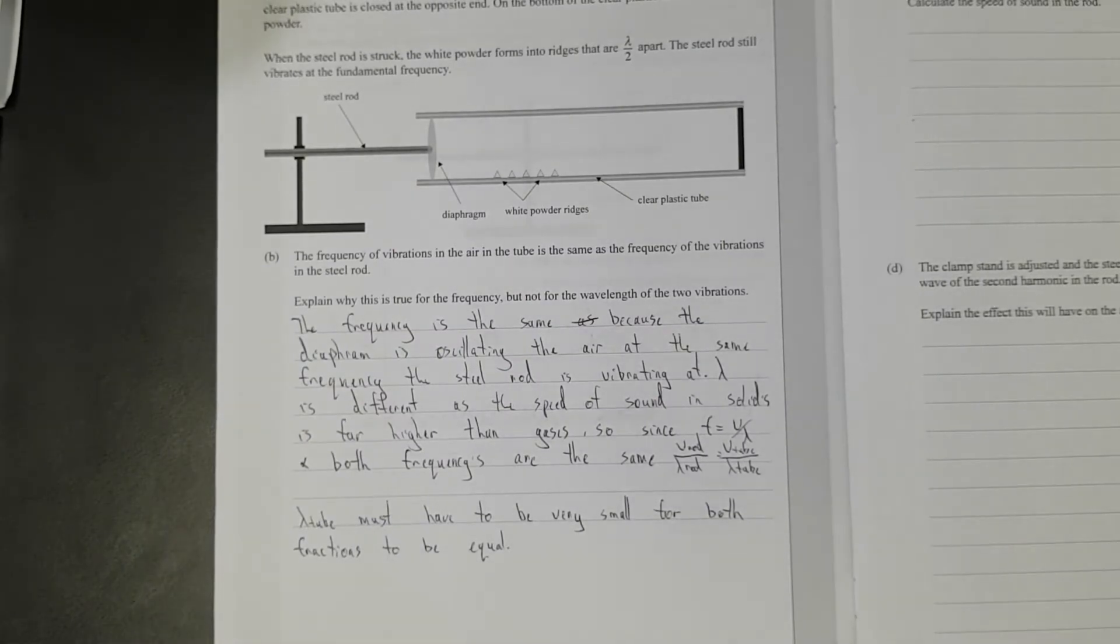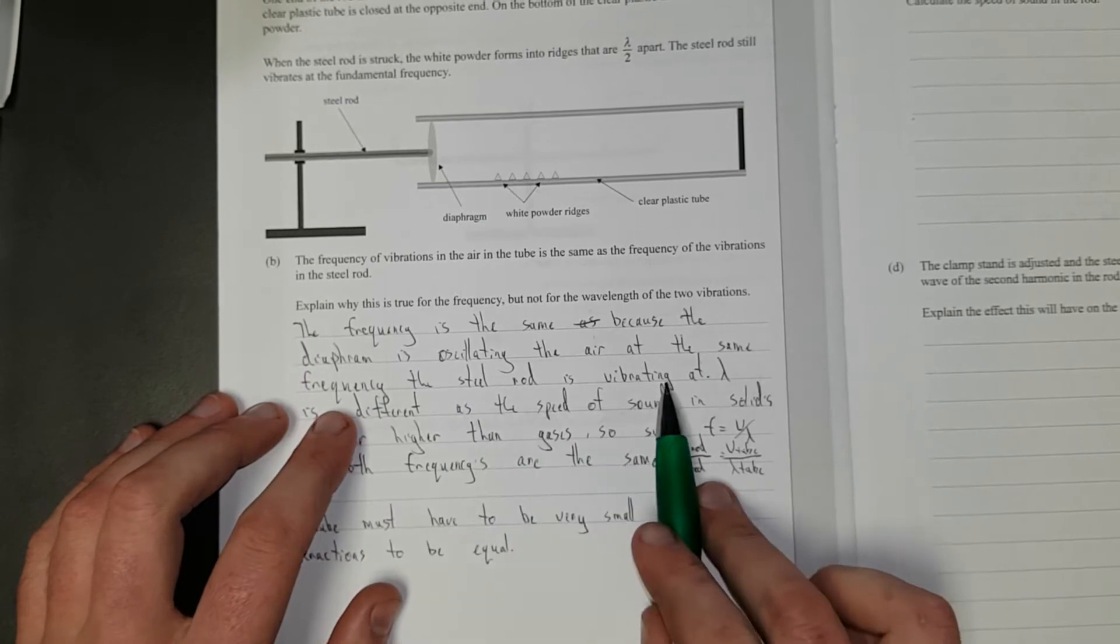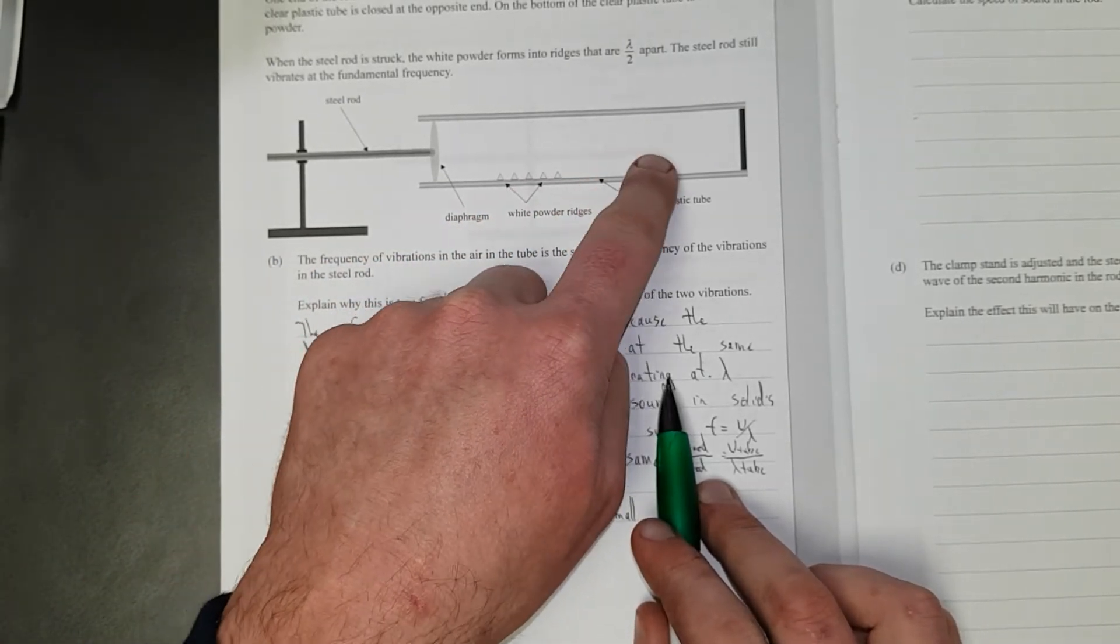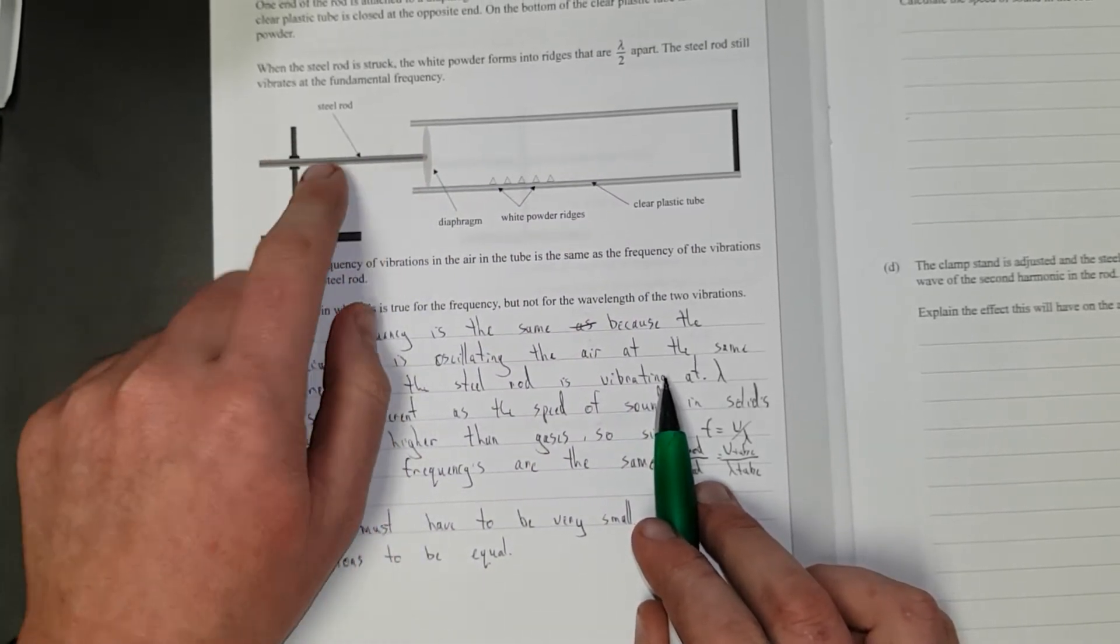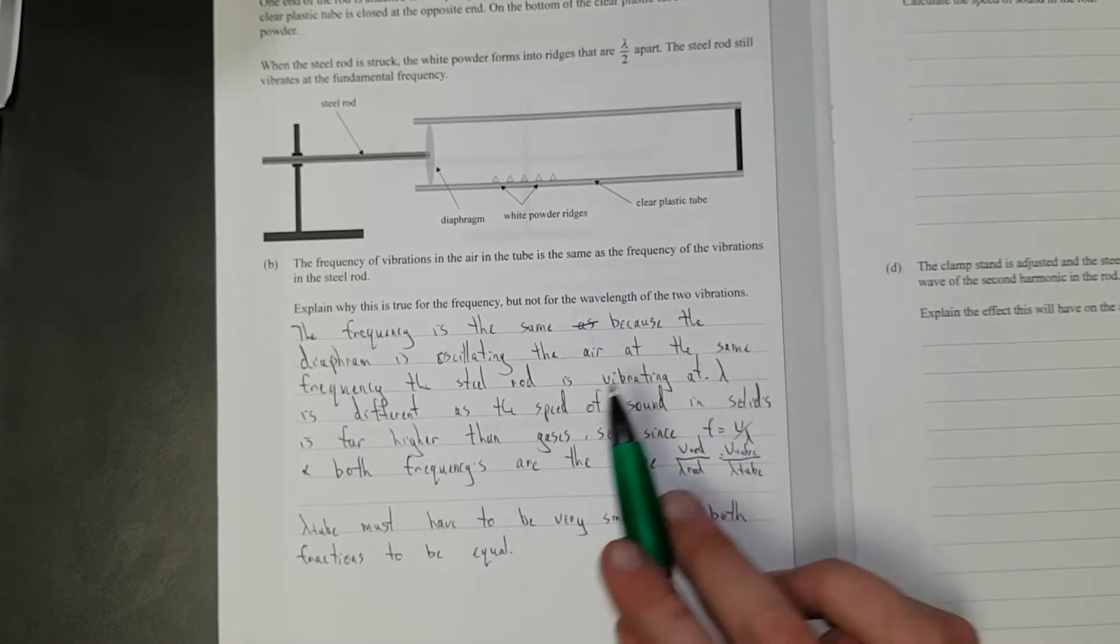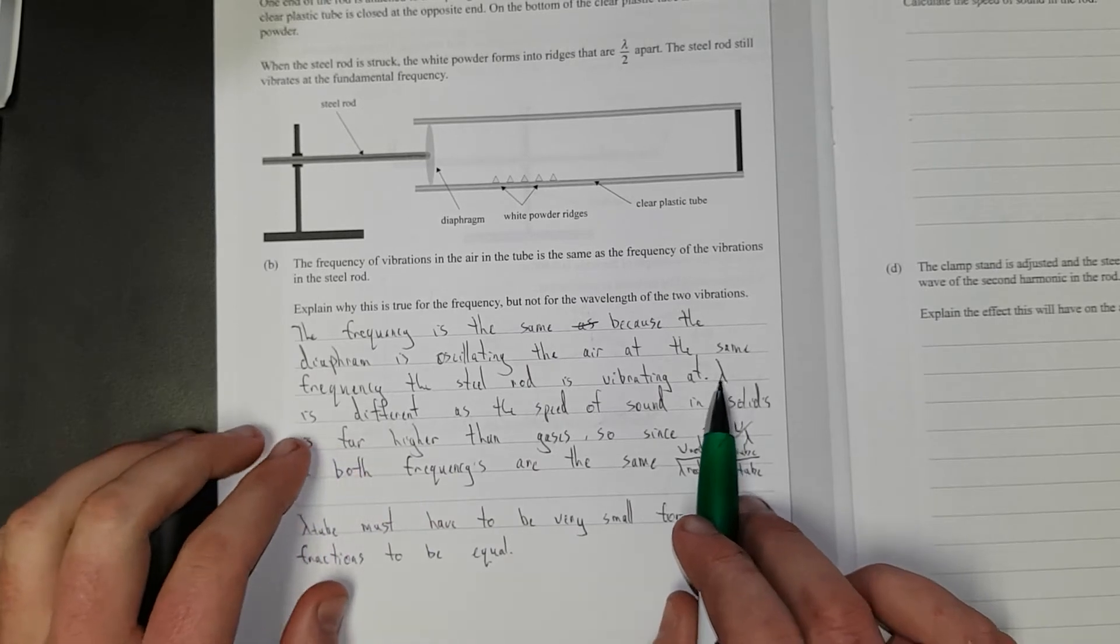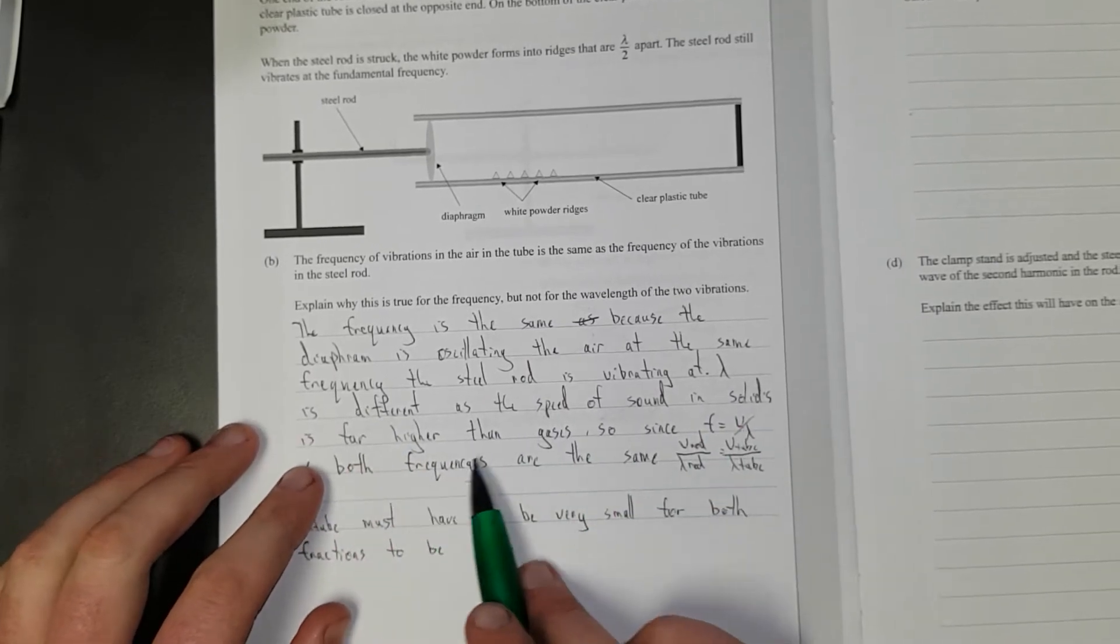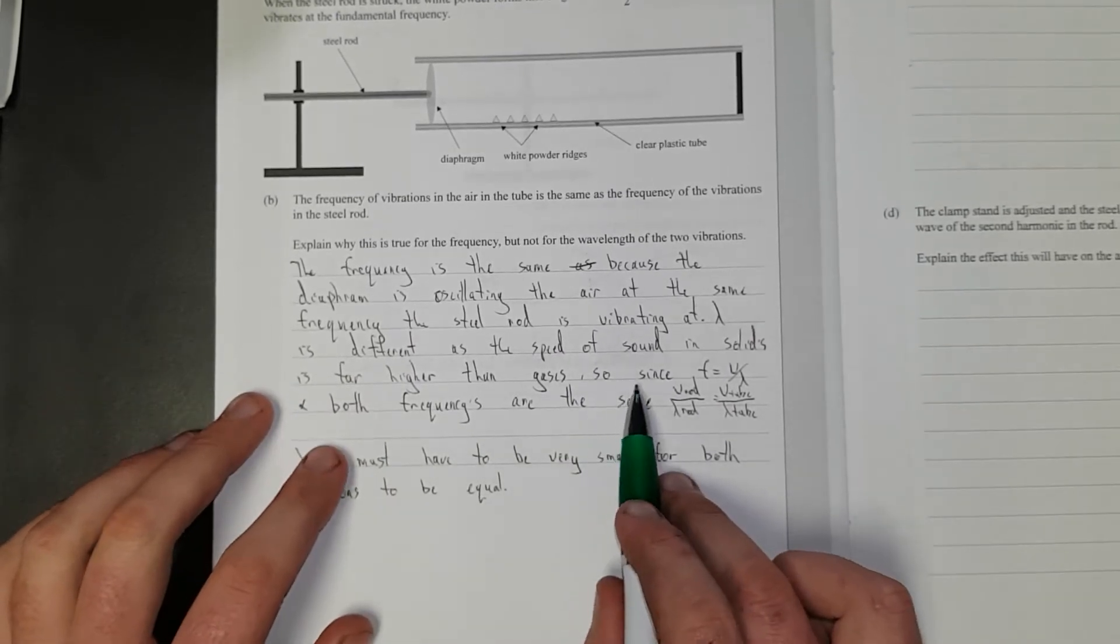Right. So I've said the frequency is the same because the diaphragm is oscillating the air at the same frequency the steel rod is vibrating at. The steel rod is driving the oscillations inside the air. You could say that however you like, as long as it was sort of grammatically correct. The wavelength is different as the speed of sound in solids is far higher than gases. You just sort of had to know that. I felt kind of bad because maybe some kids didn't.